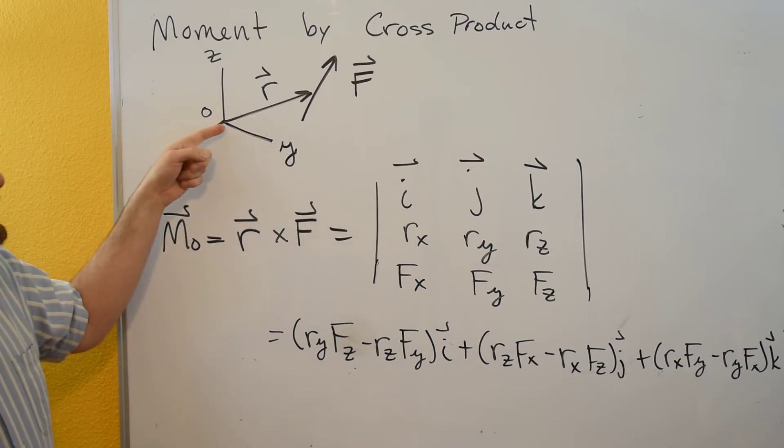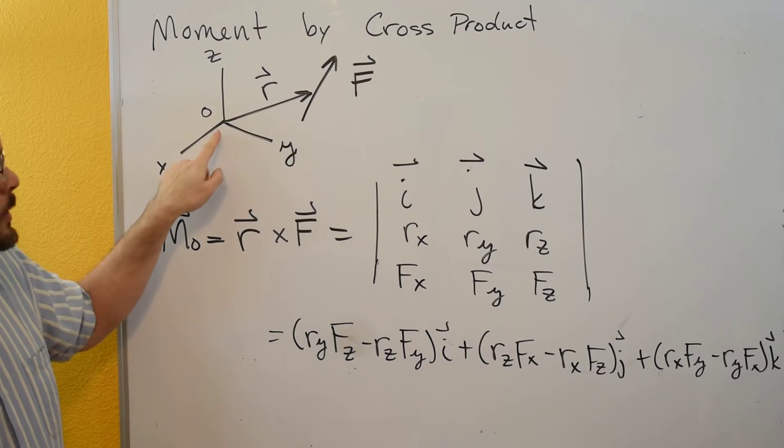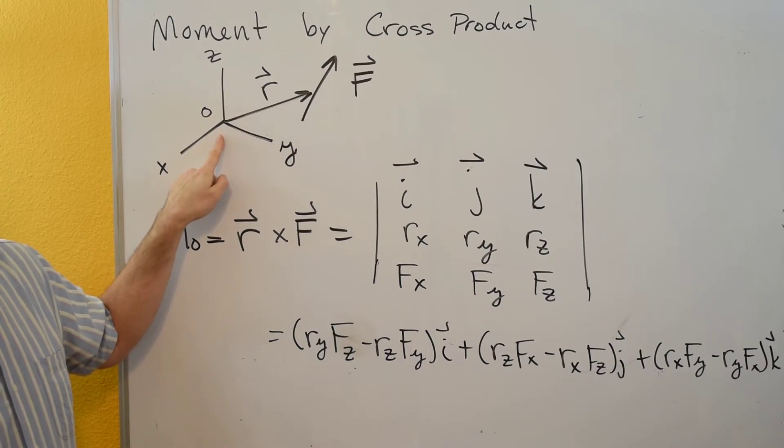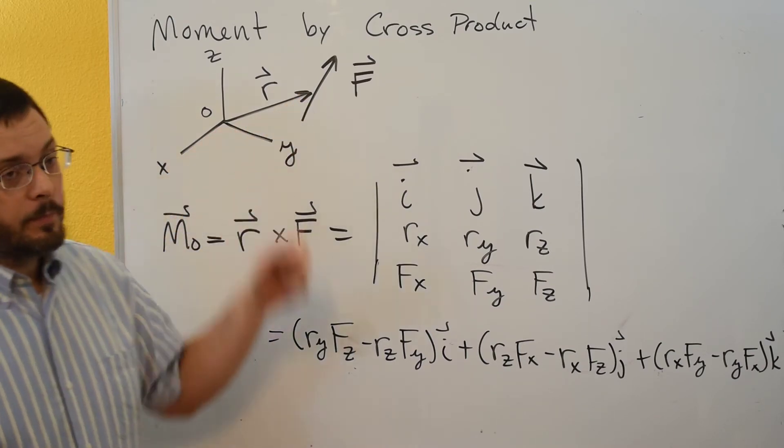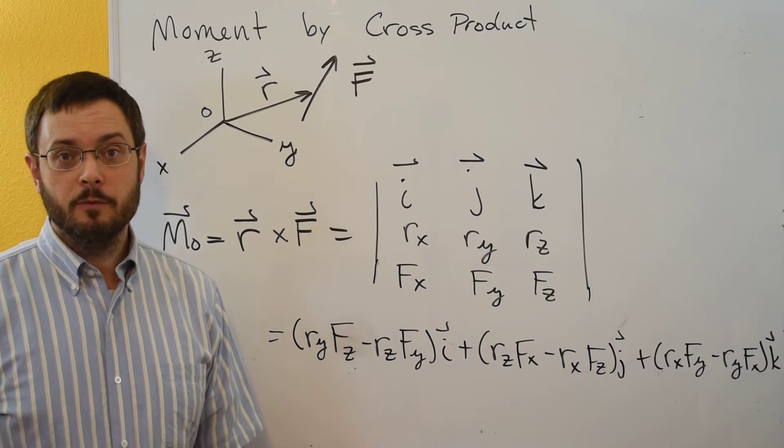We're going to draw a position vector R that goes from the point that you want to determine the moment about to any point on the line of action of the force.